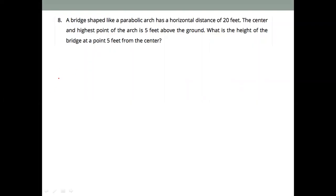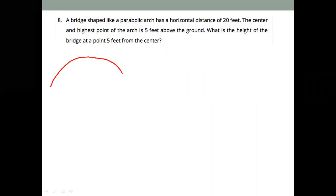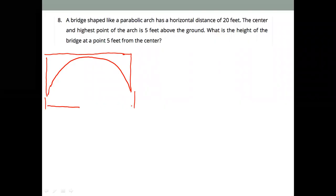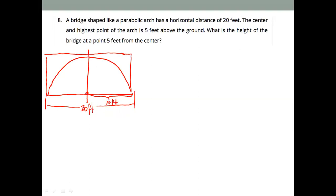We have a bridge that has a parabolic arc and it is 20 feet apart. If this is the ground and this is our origin, then this side of the arc is 10 feet — that's 20 divided by 2 — and this side of the bridge is also 10 feet.